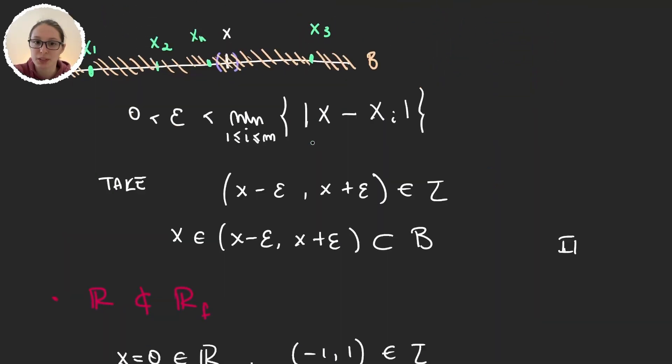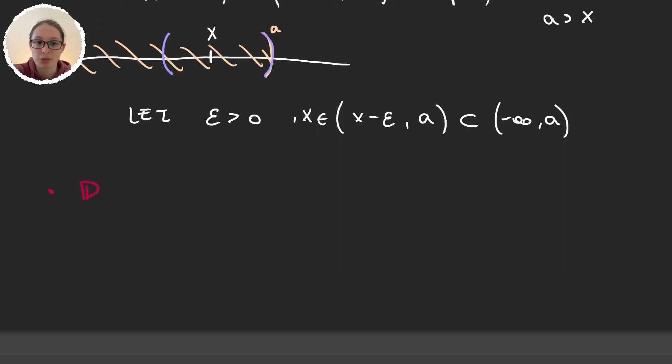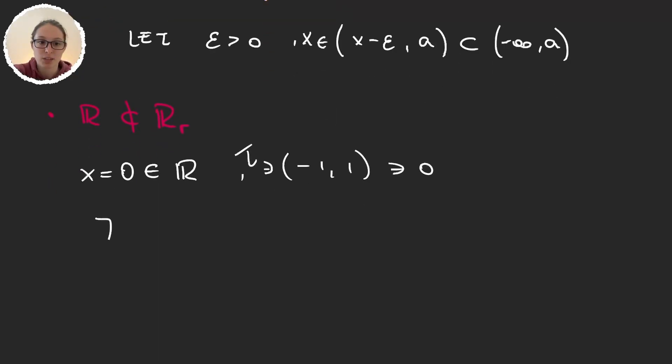But, again, it's very simple, because one is bounded and the other one isn't. So you can probably imagine what it's like. Now, again, I can just take the zero as my x, and minus one, one, a neighborhood of zero. That's in the topology, in the standard topology. Well, there is no way I can get a ray inside this. So, obviously, there does not exist an interval of the form minus infinity a contained in the minus one, one.